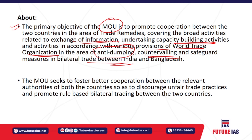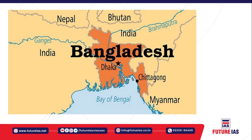The MOU further seeks cooperation between relevant authorities of India and Bangladesh to discourage unfair trade practices and promote a rule-based bilateral trading system between the two countries in order to boost bilateral trade. Bangladesh is bordered with India, and the Ganges-Brahmaputra Delta — the world's largest delta — is also formed at the Bay of Bengal.